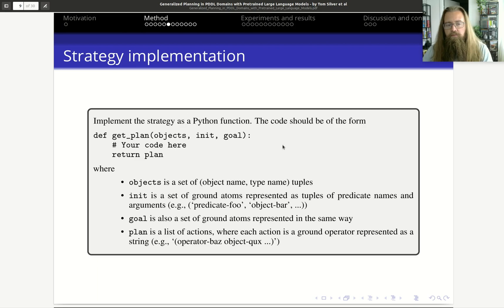Here is the third step where they ask the model to generate a get_plan function. This function will basically be like the generalized plan, and they describe what this function should be like.